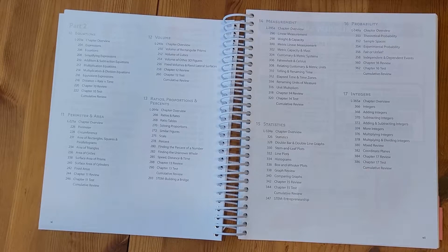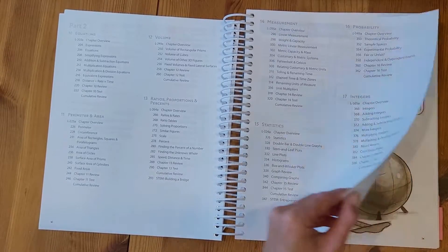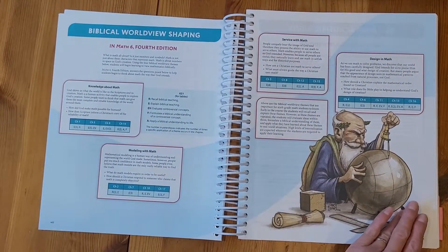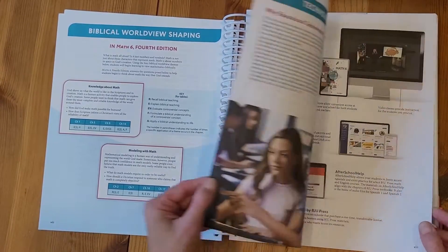So in part two you're going to be talking about perimeter area, volume, ratio, statistics, measurement, and integers. The beginning of this book always provides a lot of good information to look through before you begin teaching this course.